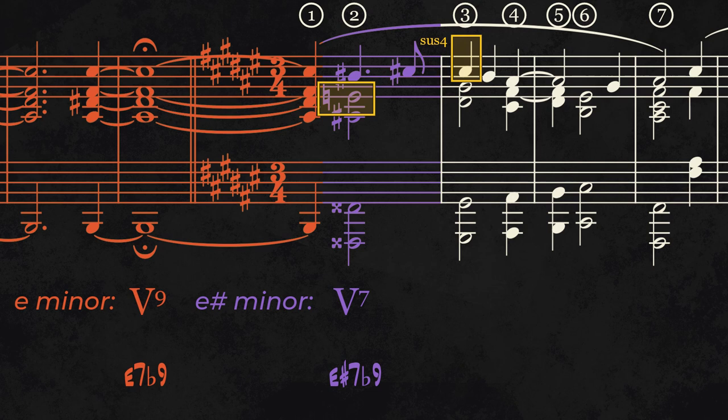Because the C sharp is also present in chord three as a suspended fourth, it acts as a pivot note linking chords two and three together, a modulation strategy used by Liszt many times in this very sonata.